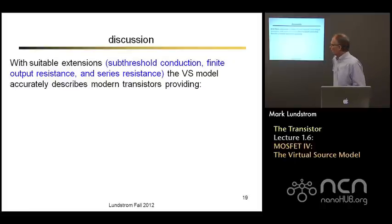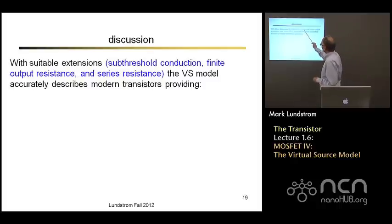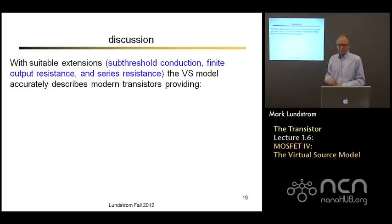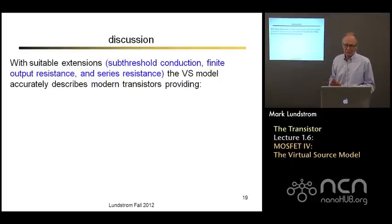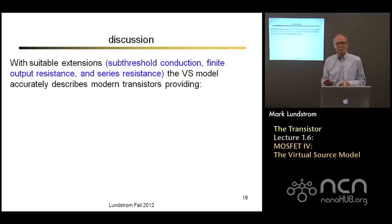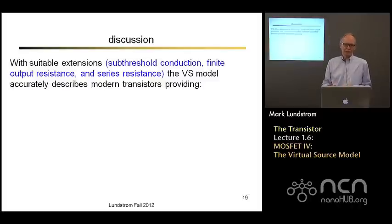So with these kinds of extensions — sub-threshold conduction, which we can't do until we talk about MOS electrostatics in more detail; finite output resistance, which we'll be able to treat when we talk about 2D electrostatics; and series resistance, which we've just discussed — this virtual source model is a very good way to describe modern transistors.